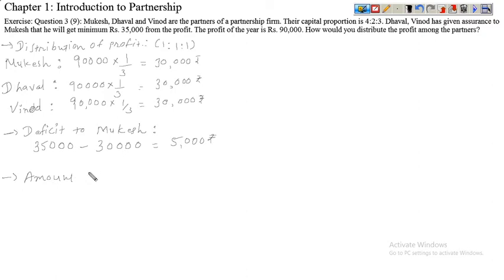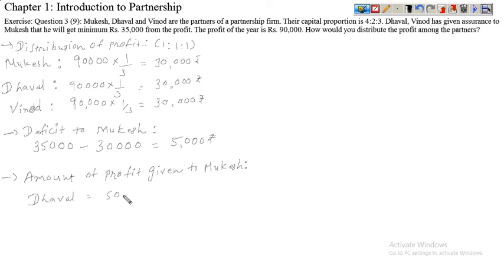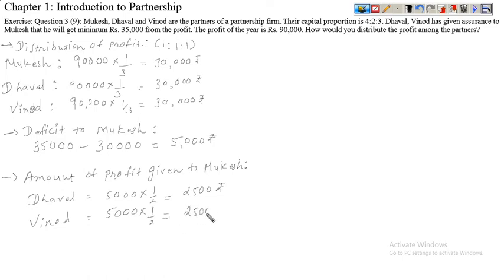So the deficit amount to be paid to Mukesh: Dhaval will pay ₹5,000 multiplied by 1/2 = ₹2,500. Similarly, Vinod will pay ₹5,000 multiplied by 1/2 = ₹2,500. So a total of ₹5,000 will be paid to Mukesh.